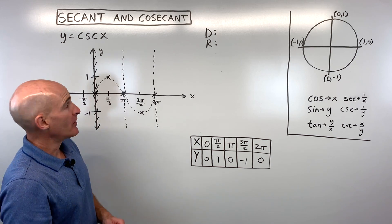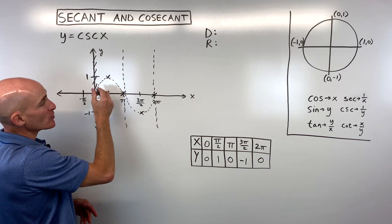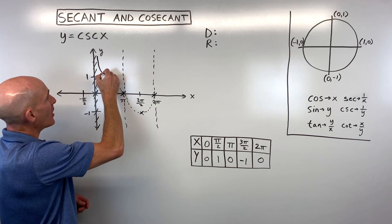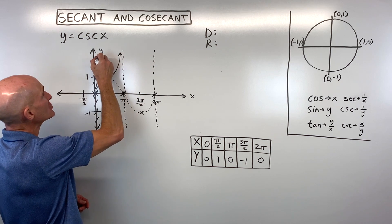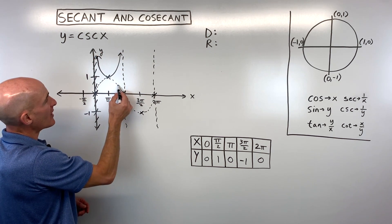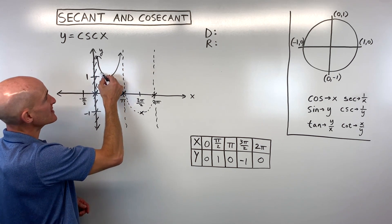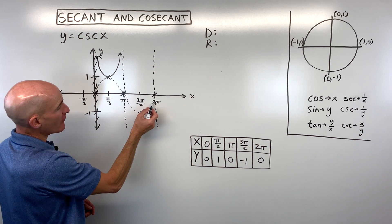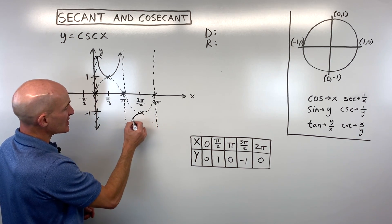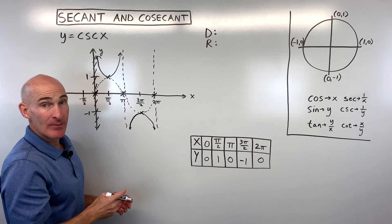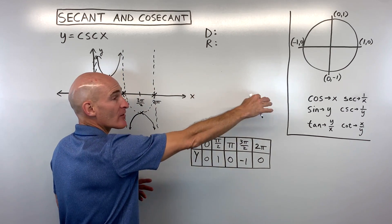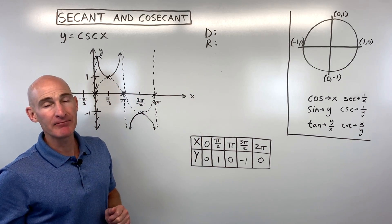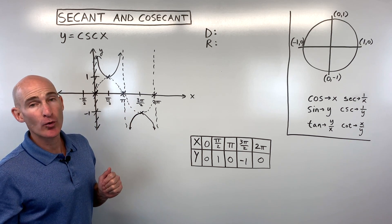Just like with secant, where the sine graph bends, the cosecant and sine coincide, then the cosecant graph bends the other direction. As sine gets smaller, 1 divided by one-half is 2, and 1 divided by one-fourth is 4, so the cosecant graph grows larger. Where sine is negative one-half, 1 divided by −one-half is −2, which is why it bends the other direction. The cosecant graph continues forever in both directions.